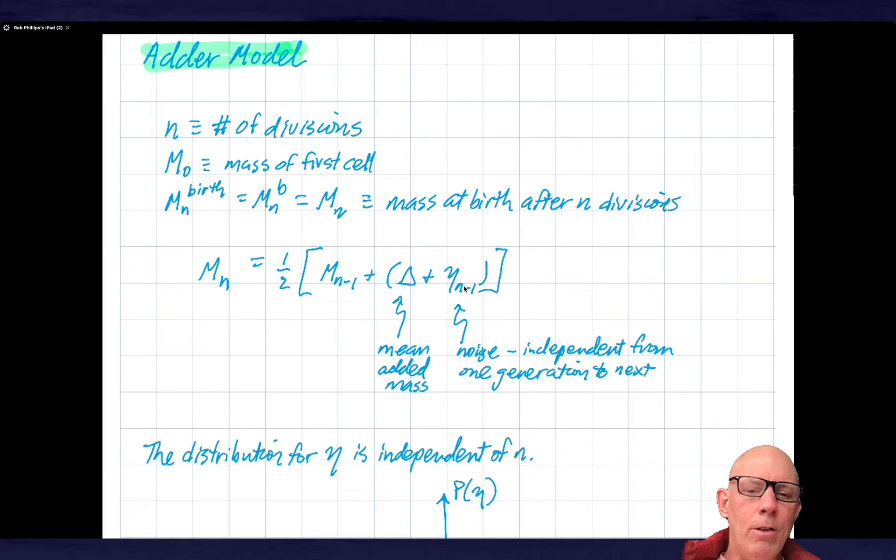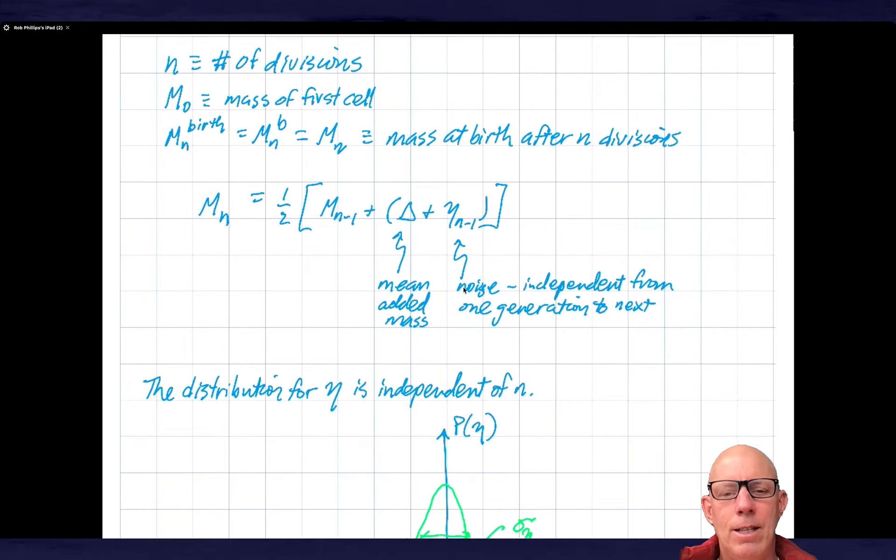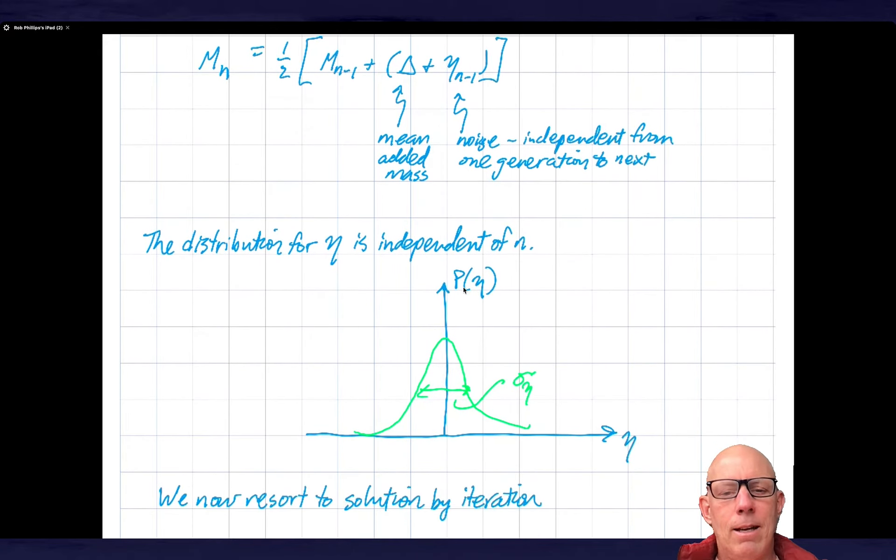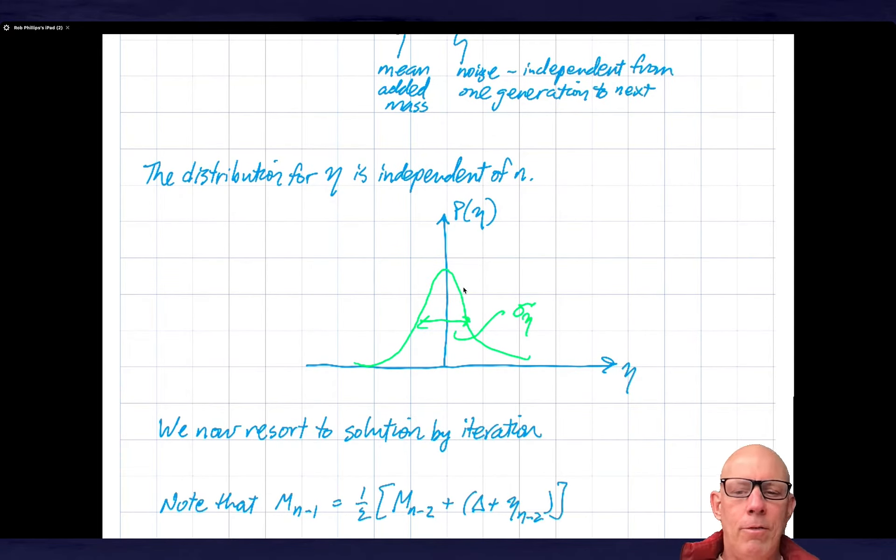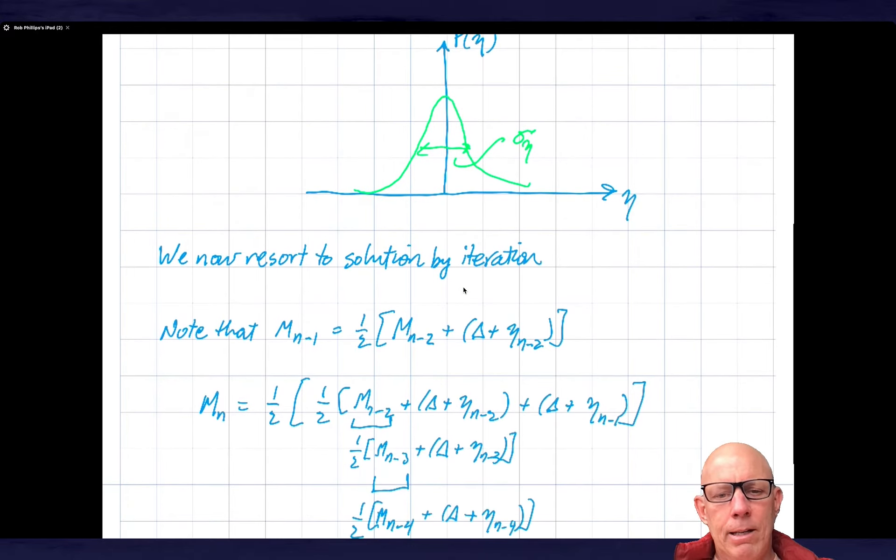We can't expect that the added mass will perfectly correspond to delta. For the purposes of this argument, I want you to imagine that this noise term eta is drawn from a Gaussian distribution. We can talk about other options later, but that's the main point.